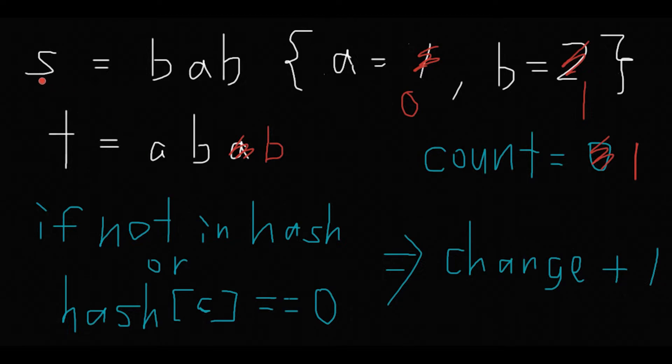If I change this a to b, then string s has 1 a and 2 b's, and string t has 1 a and 2 b's, so that is an anagram of string s.